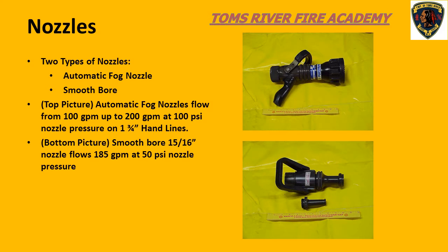The bottom picture is a 15/16-inch smoothbore nozzle. This nozzle flows 185 gallons a minute at 50 pounds nozzle pressure.